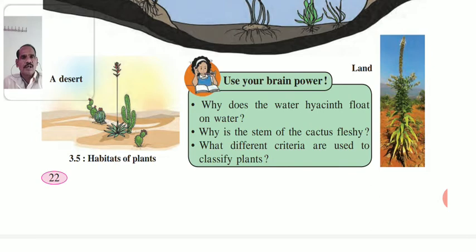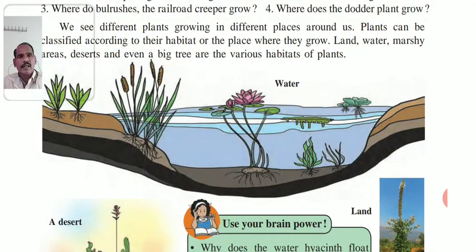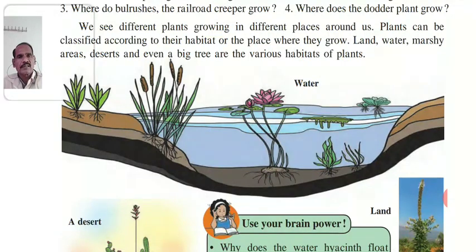Plants are classified as trees, shrubs, and herbs. They are also classified by their lifespan as annual, biannual, or perennial. Another classification is based on habitat: land, water, marsh areas, and deserts.